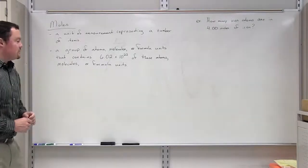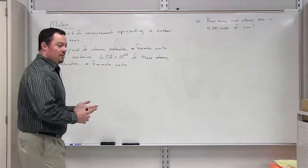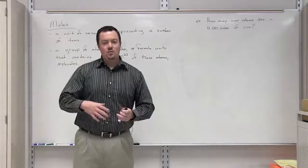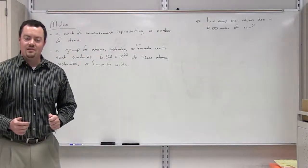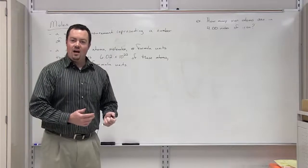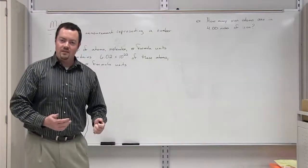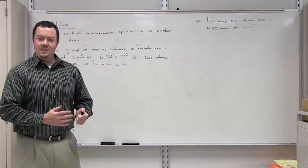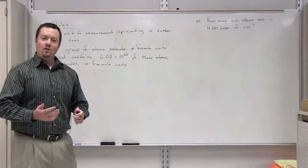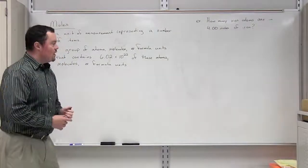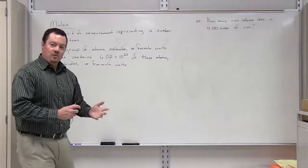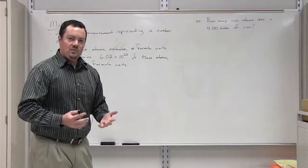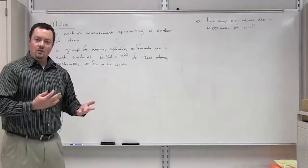A mole is simply a unit of measurement representing a number of items. So when you go to the grocery store and you buy a dozen eggs, you expect every time you're going to get 12 eggs. The word dozen is a unit of measurement for a particular number. Same thing for moles. Moles is a unit of measurement representing an exact number of particles.